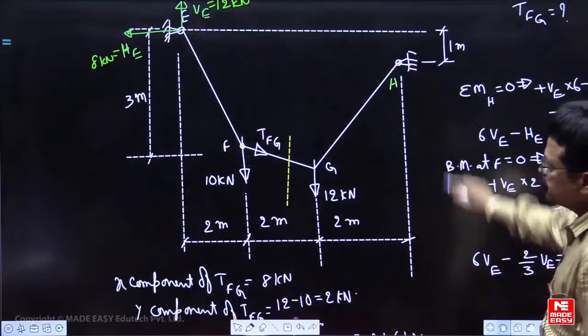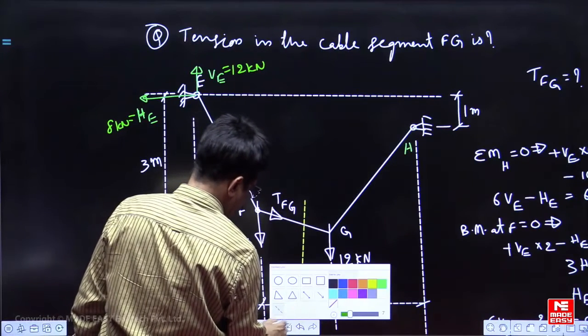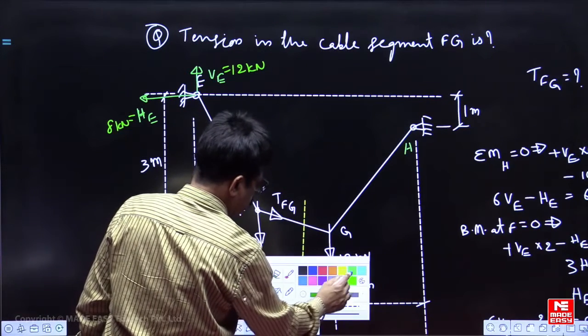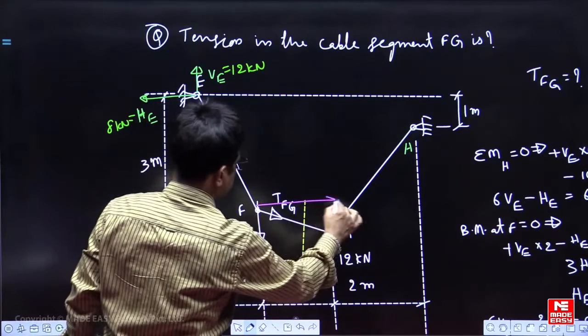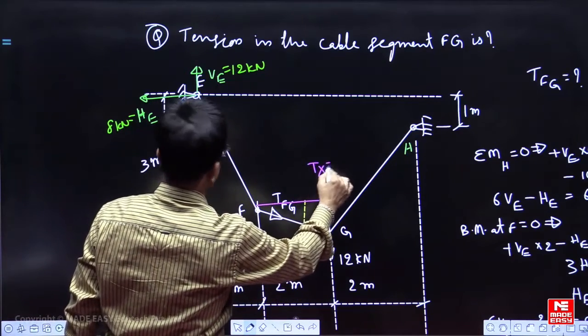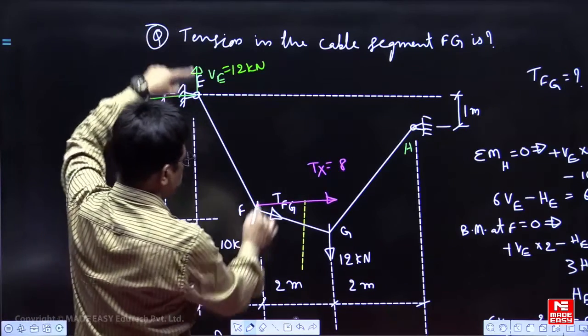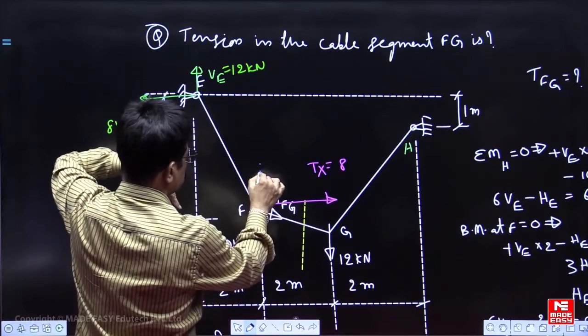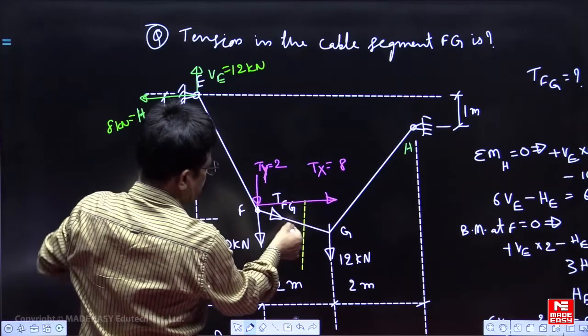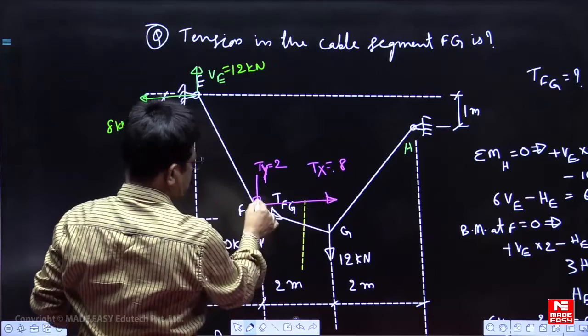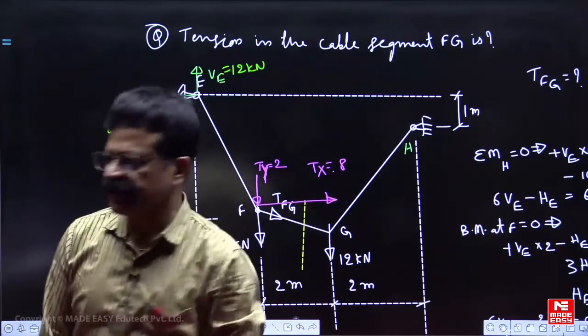That means, you should take the free body diagram such that, see here, HE is acting like this. So, this is tension, the X component is 8, 12, 10. So, net upward 2, so downward must be 2. TY component must be 2. Now, resultant is this one, TX square plus TY square, 8 square plus 2 square under root, you will get the tension in the cable.